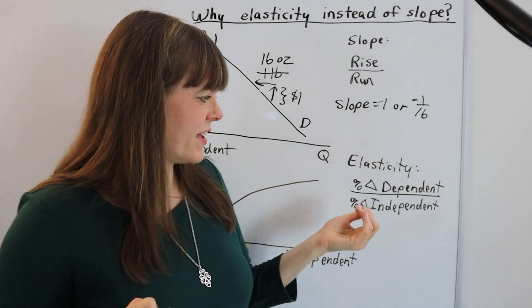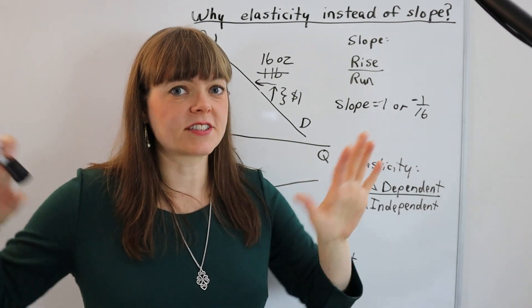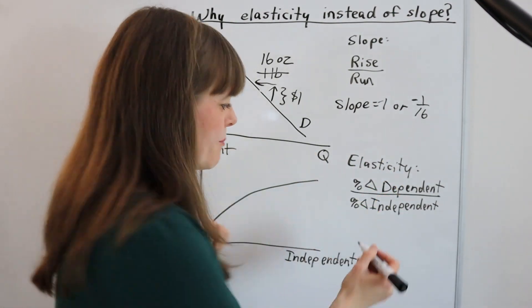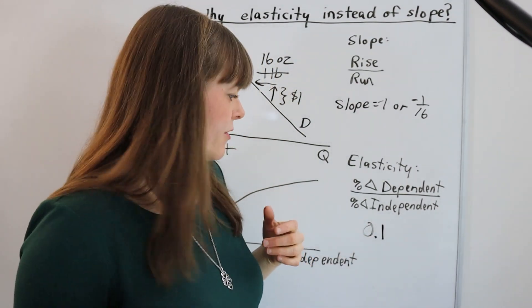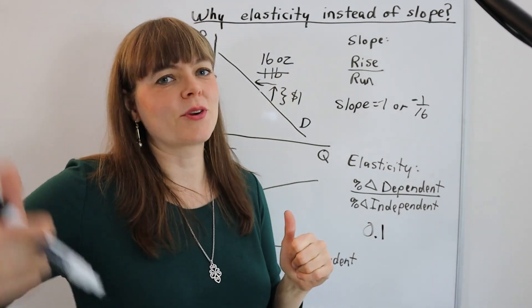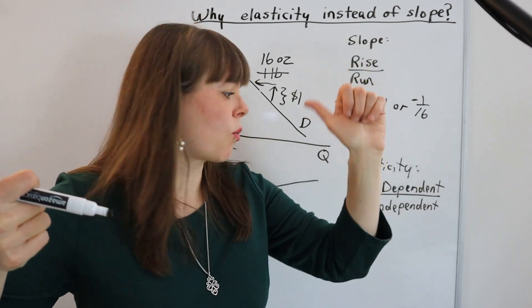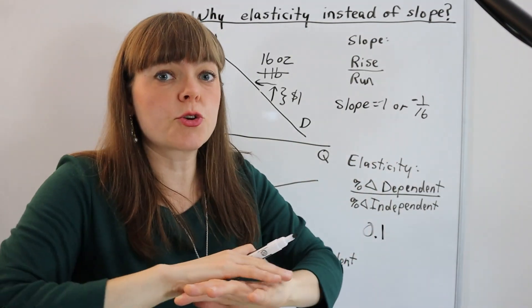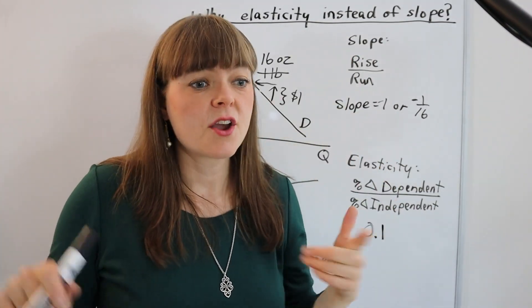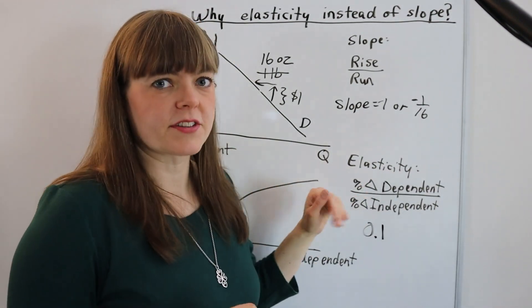So another benefit is going to be the fact that elasticities can be compared across different types. Like a 0.1 elasticity, economists kind of know what that means. It means if you increase the independent variable by 10%, you get a 1% increase in the dependent variable. And that's going to be true across all types of goods, regardless of how you measure it, regardless of how you're thinking about this relationship.